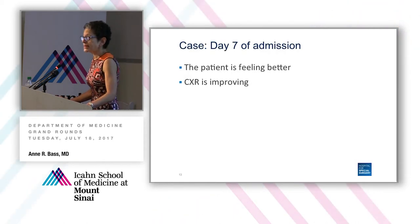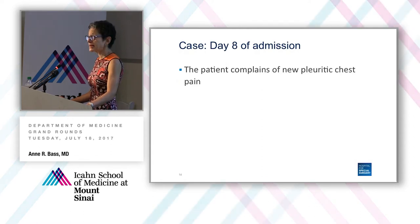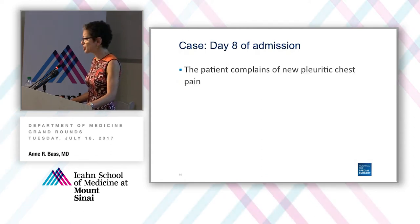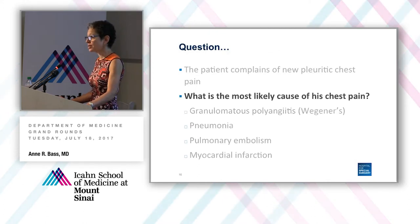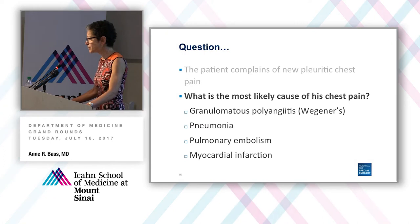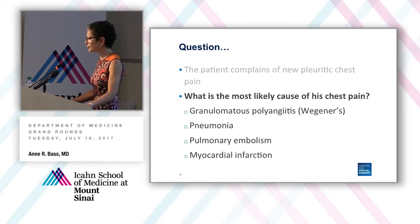On day seven of admission, the patient is feeling better and chest X-ray is improving. But on day eight, he complains of new pleuritic chest pain. So what is the most likely cause of his chest pain — is it his granulomatous polyangiitis, pneumonia, PE, or myocardial infarction?